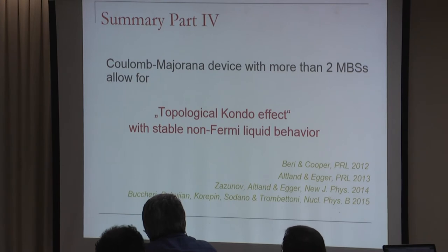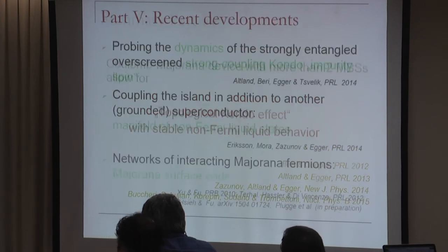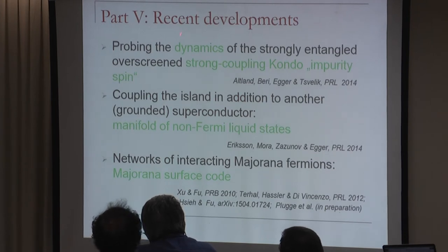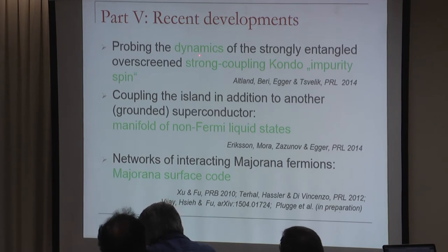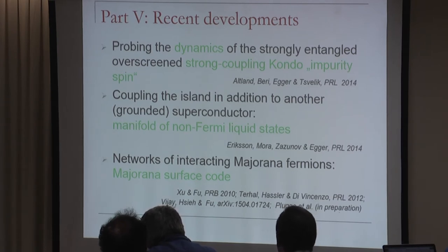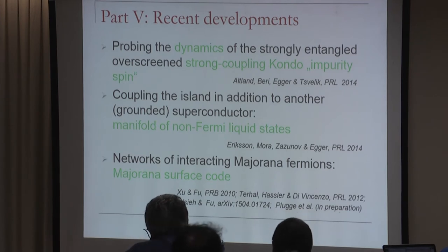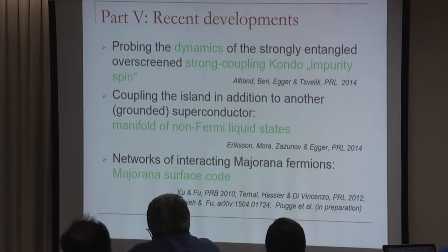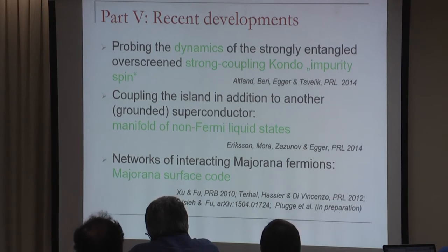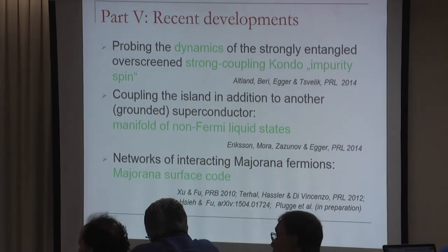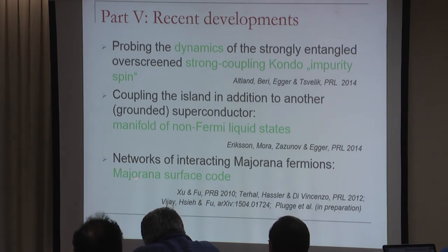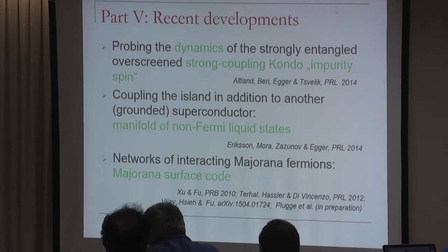This concludes the discussion of the topological Kondo effect with stable non-Fermi liquid behavior. As a final part, I will discuss three more recent developments: the dynamics of the residual impurity degree of freedom near the strong coupling fixed point; what happens when the island is also coupled to a bulk superconductor via Josephson effect, which allows a manifold of non-Fermi liquid states; and a brief advertisement for a talk on Majorana surface codes—networks of interacting Majorana fermions for topological quantum computation.